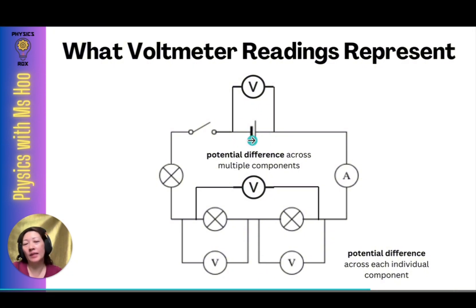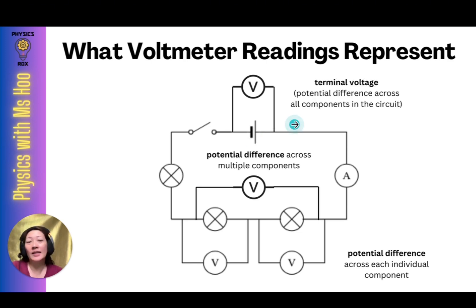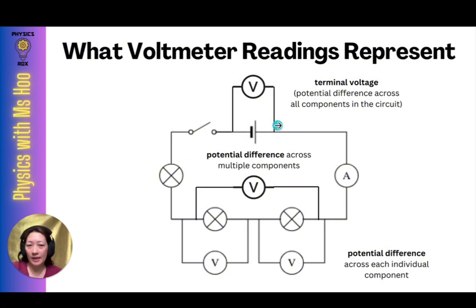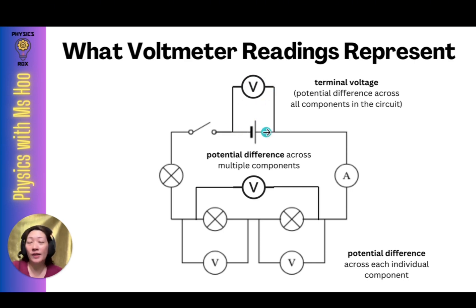What about the voltmeter across the dry cell? Is it measuring the electromotive force? Not really — it's actually measuring the terminal voltage, so called because it's placed across the terminals of the cell. Terminal voltage is not necessarily equal to the electromotive force. This voltmeter is measuring the potential difference across all components in the circuit — through the ammeter, through each light bulb, and through the switch. So this voltmeter is actually measuring a potential difference across multiple components, in this case all the components in the circuit.